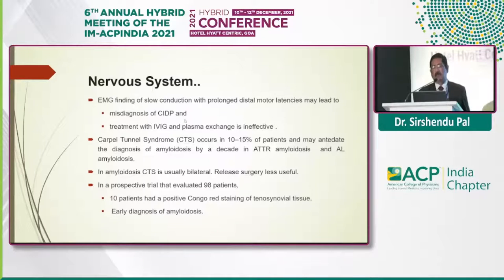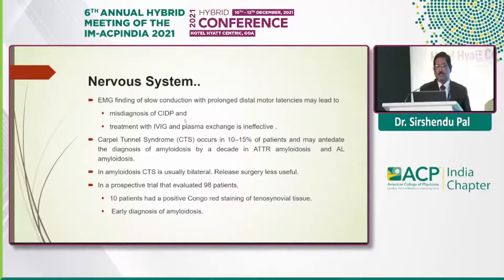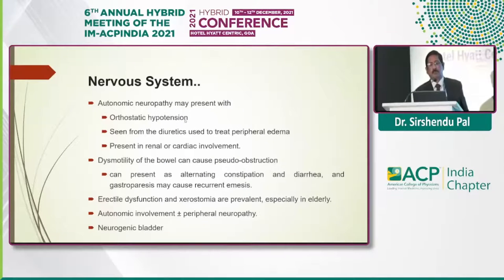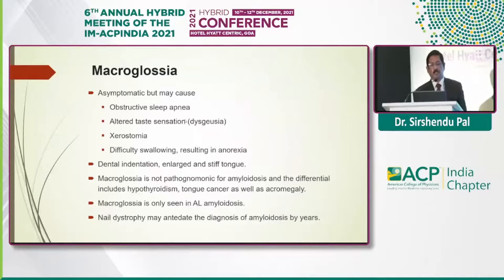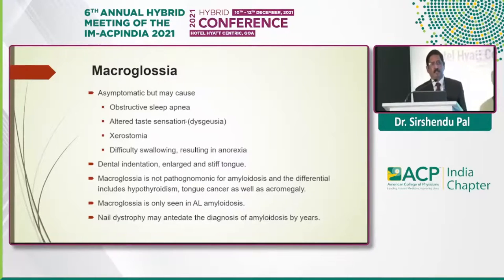Carpal tunnel syndrome may anticipate the diagnosis of amyloidosis by a decade in ATTR amyloidosis. It is usually bilateral, and carpal tunnel release surgery is usually not helpful. In a possible trial, evaluation of carpal tunnel tissue — where 10 out of 90 patients showed positive Congo red staining — can lead to early diagnosis of amyloidosis. Autonomic neuropathy may present with hypotension, disturbance of bowel with pseudo-obstruction, alternating constipation and diarrhea, lifestyle dysfunction, or neurogenic bladder. Macroglossia is typical but rarely seen; dental indentation is present and macroglossia is only seen in AL amyloidosis. Nail dystrophy may antedate the diagnosis of amyloidosis by a year.